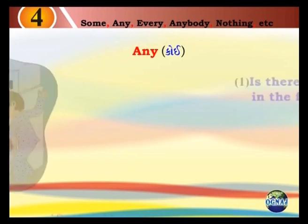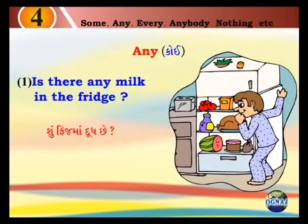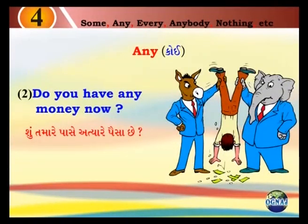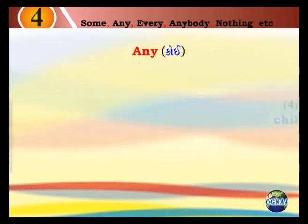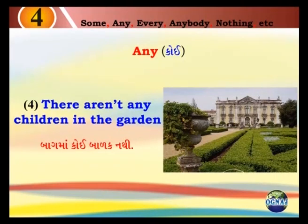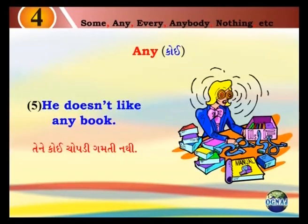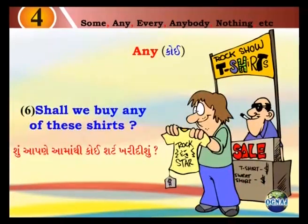Any. Koi. 1. Is there any milk in the fridge? Shoo, fridge maan dhudh chhe. 2. Do you have any money now? Shoo, thamayari paas ea atyar e paisa chhe. 3. They don't have any cars. Temeni paas ea gari naathii. 4. There aren't any children in the garden. Bagmaa koi baadak naathii. 5. He doesn't like any book. Tenei koi chopadiy gamtii naathii. 6. Shall we buy any of these shirts? Shoo, aapnei aamatii koi shirt karii tishu.